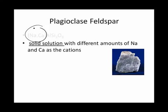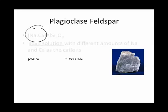If, for example, it's only sodium, you have albite, or a totally white feldspar. And if it's all calcium, you have anorthite, which is gray.